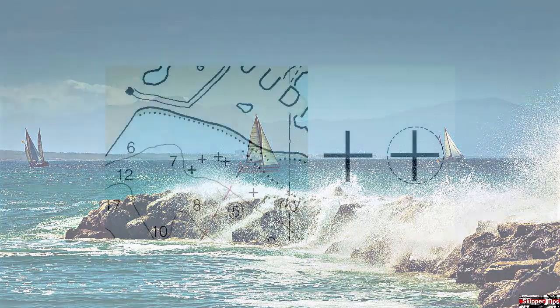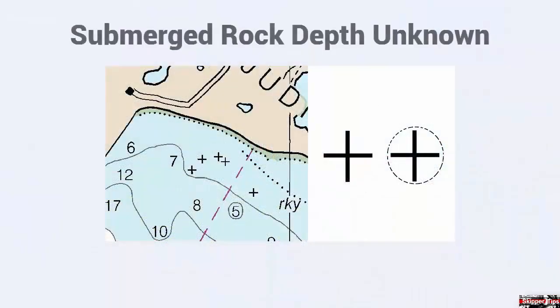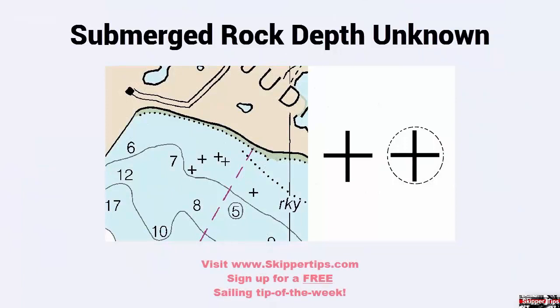A plus sign means a submerged rock with a depth unknown. These rocks will be underwater at all stages of the tide. This symbol may or may not be surrounded by dots.